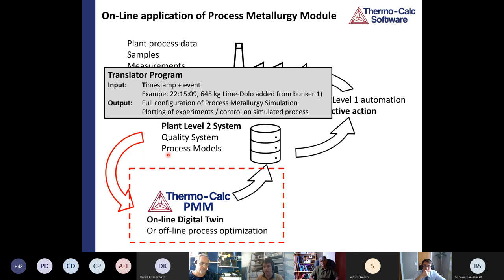We've written a little translator program. These processes are often so complex, it's not possible to add all the steps by hand. This translator program takes data directly from the level two system that typically has a timestamp and an event. It could be, for example, at quarter past 10 at night, 645 kilograms of lime was added from bunker one. We take this information in tabular form, typically tabular form in the level two system, and make a process simulation file that's readable by thermocalc. Then we can actually calculate what this event in the steel plant, what effect that's going to have on the process. This is what we're working on now. It's a work in progress.